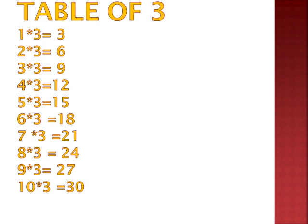Now from six onwards: six threes are 18, seven threes are 21, eight threes are 24, nine threes are 27, ten threes are 30. Again from beginning: 1 threes are 3, 2 threes are 6, 3 threes are 9, 4 threes are 12, 5 threes are 15, 6 threes are 18, 7 threes are 21, 8 threes are 24, 9 threes are 27, 10 threes are 30.